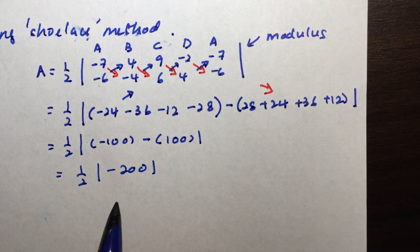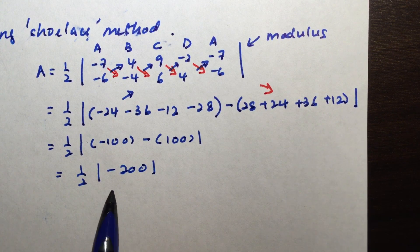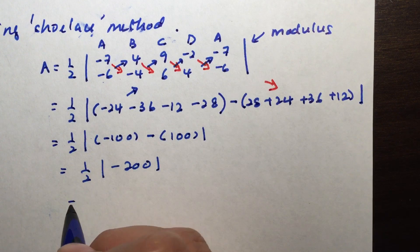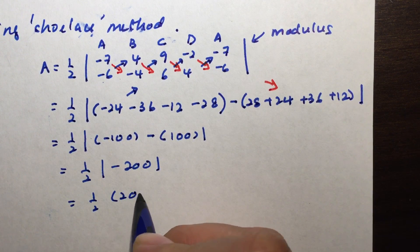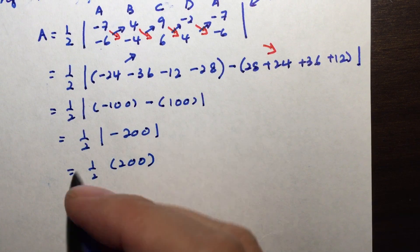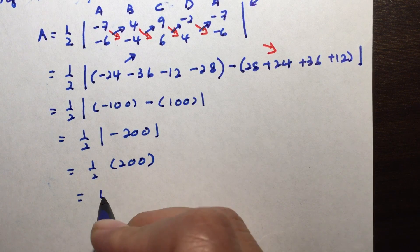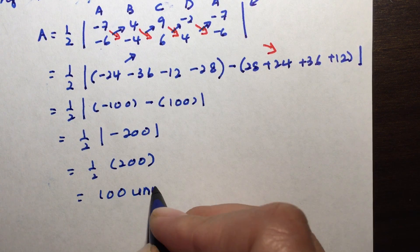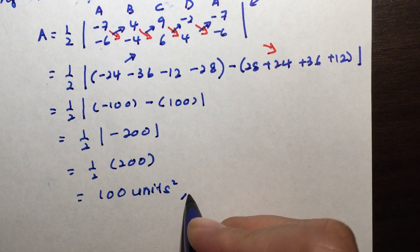Now it doesn't make sense to have a negative area, right? So actually with the modular sign, we can just disregard the negative and we just take it as 200. In this case here, half of 200 is 100, and this is 100 square units, and this will be my answer.